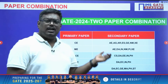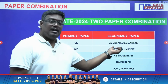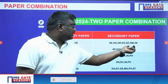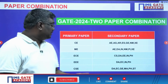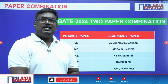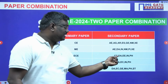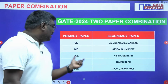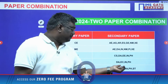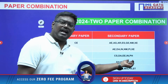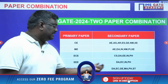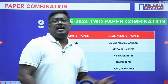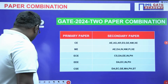Similarly, for mechanical, you can apply for aerospace, data science, instrumentation, naval architecture, production, and XE. For ECE, the options are computer science, DA, EEE, instrumentation, and physics. For electrical: DA, EC, instrumentation, and physics. For CS: DA, EC, GE, maths, physics, and statistics.